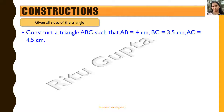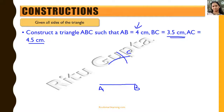We take AB as the base and draw AB equal to 4 cm using a ruler. We open the compass to 3.5 cm and with B as center, mark an arc. Then we open the compass to 4.5 cm and with A as center, draw another arc. The intersection point is C. We join C with A and B to get the triangle using the SSS criteria, which gives a unique triangle.